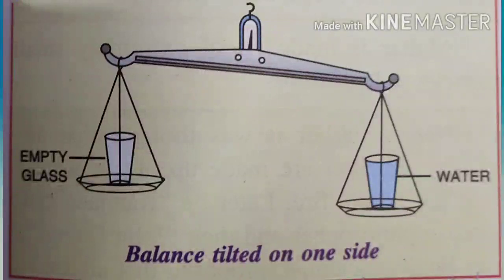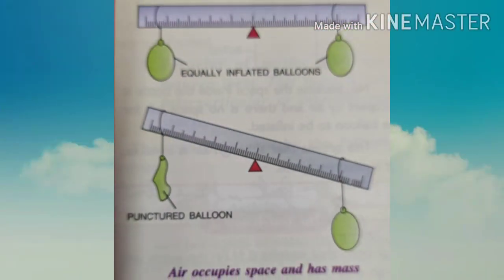We can also prove that air has mass and occupies space. Take two similar balloons and blow air into them — you will observe that their shape changes and they become inflated, because air inside the balloon occupies space. Inflate them equally, then suspend one balloon to the left of a meter scale and the other to the right, balancing the scale in the middle with a peg. Now puncture one of the balloons with a needle. You will observe that air escapes and the meter scale tilts towards the inflated balloon, because of the mass of air present in it. This proves that air occupies space and has mass.